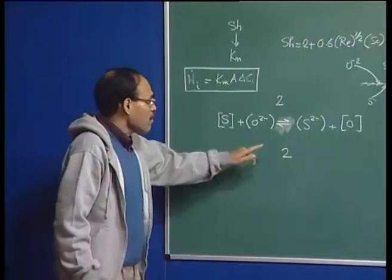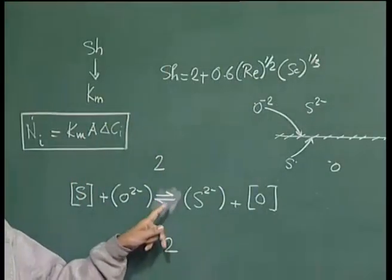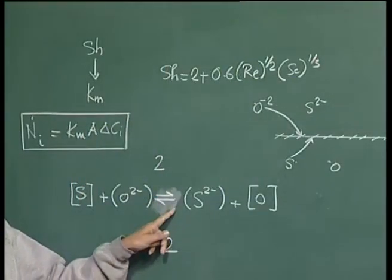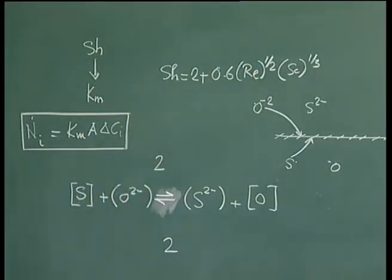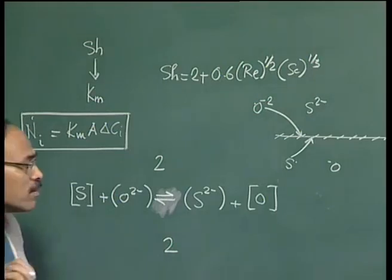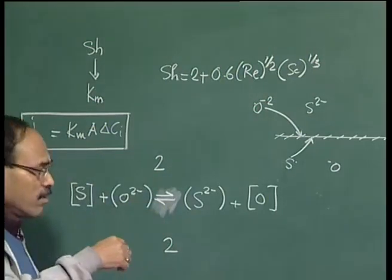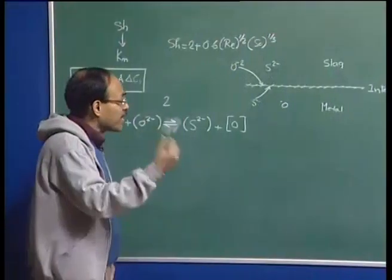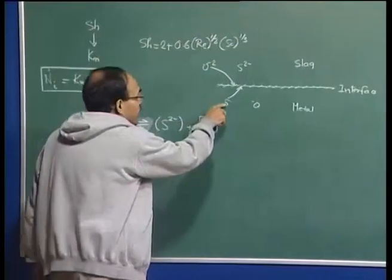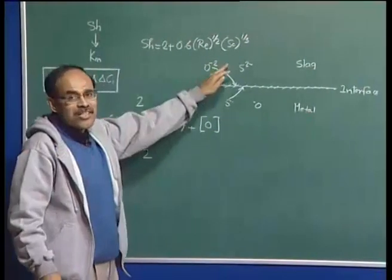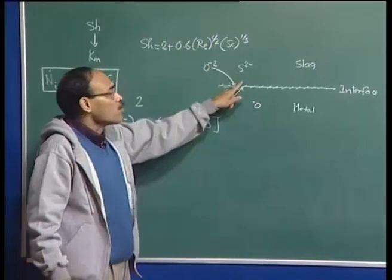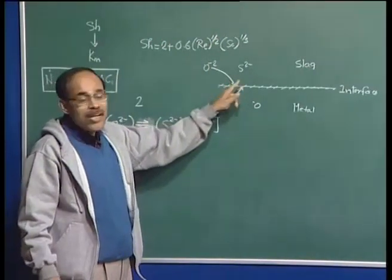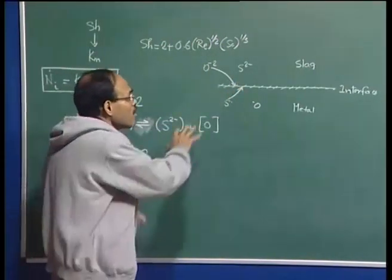If chemical reaction is very fast and approaches equilibrium, and if kinetic analysis shows that mass transport in the metal phase is not rate limiting — meaning it is very fast and there is no concentration gradient of sulfur or oxygen in the metal — then everything is well mixed. We have a homogeneous concentration in the metal phase. So the rate-controlling step reduces to mass transport in the slag phase.